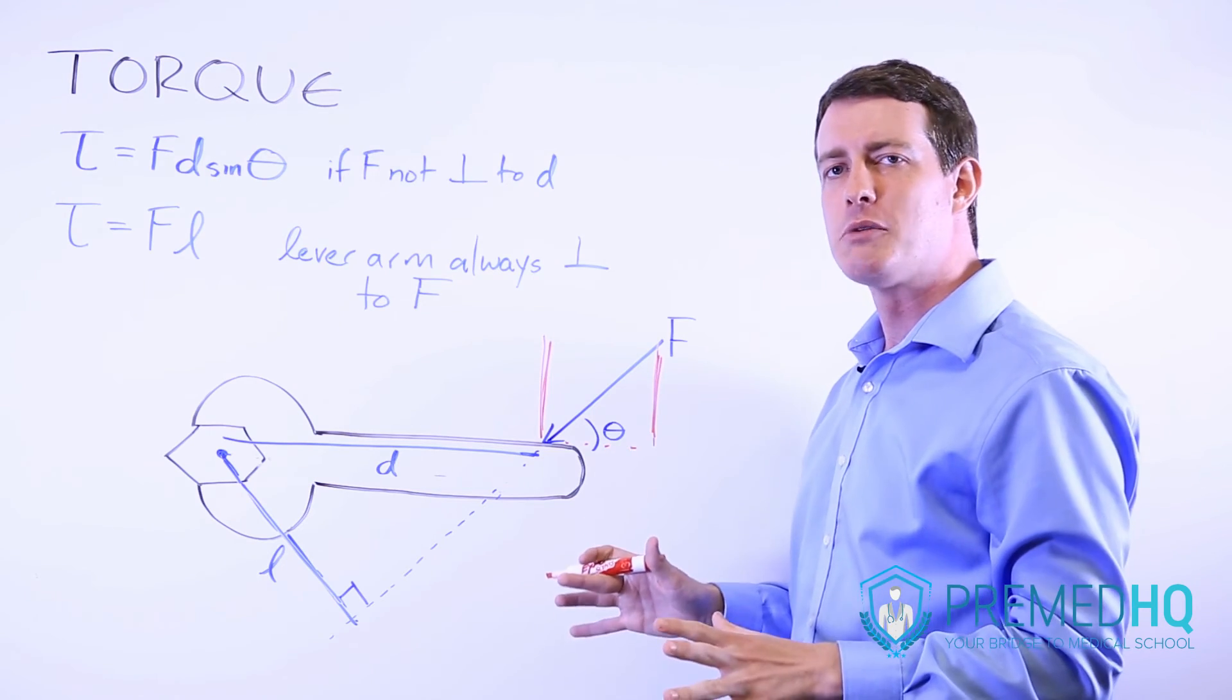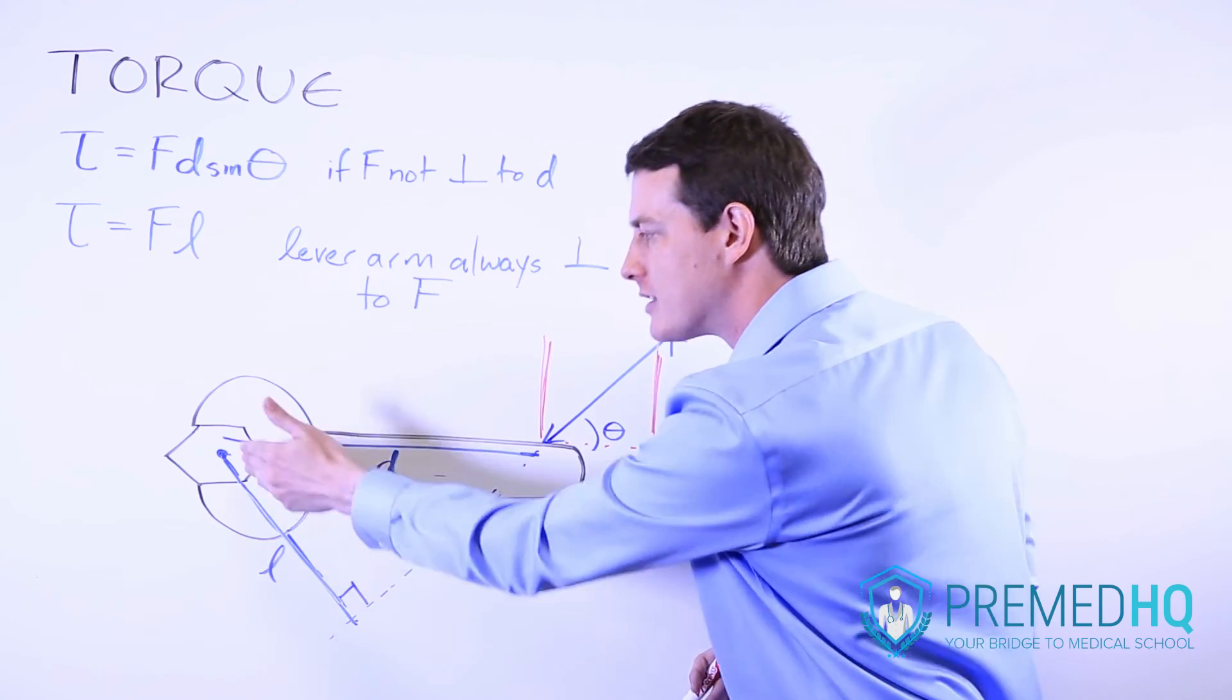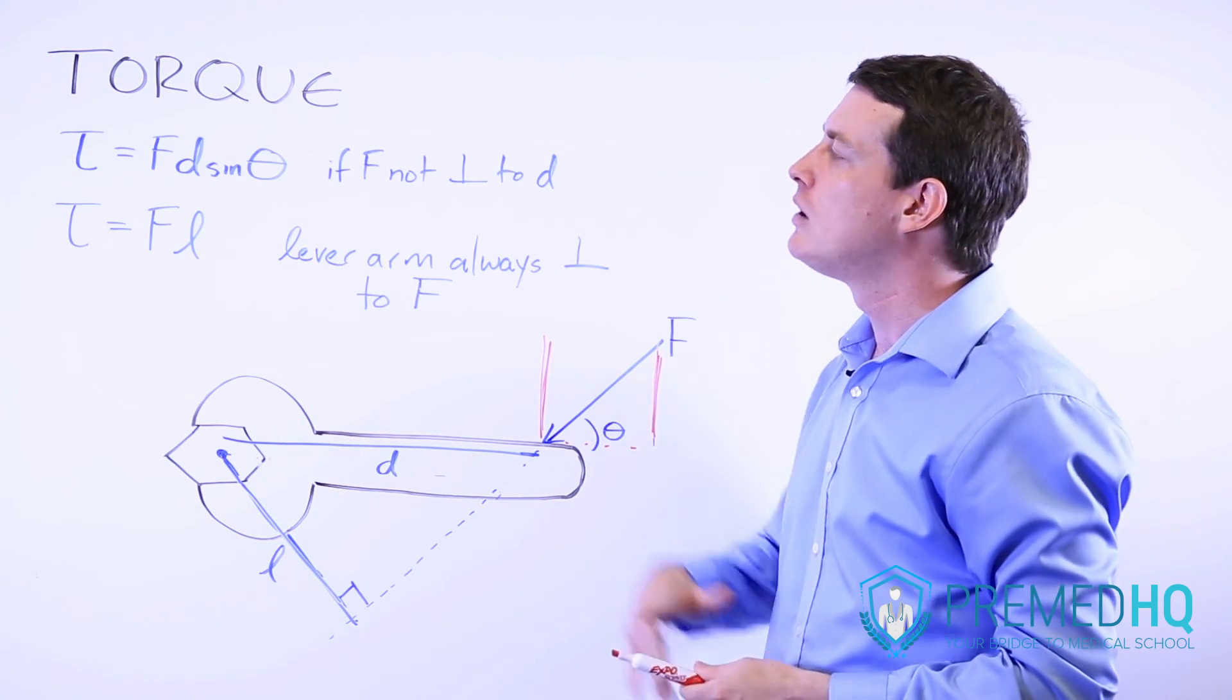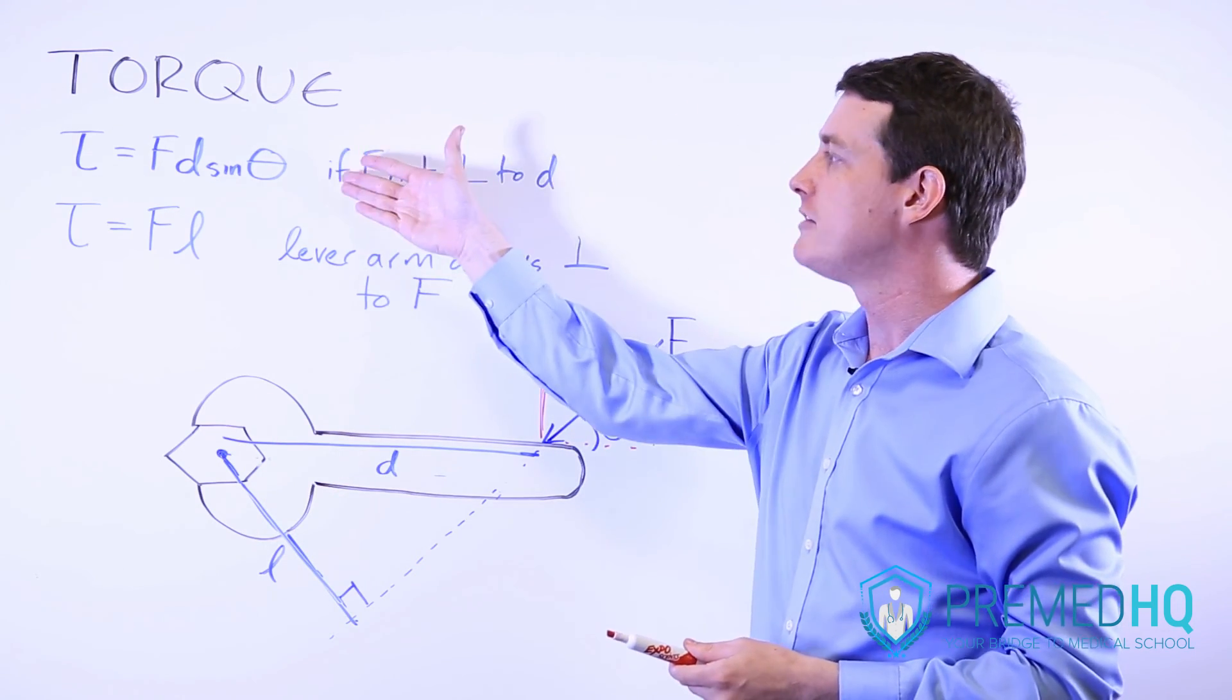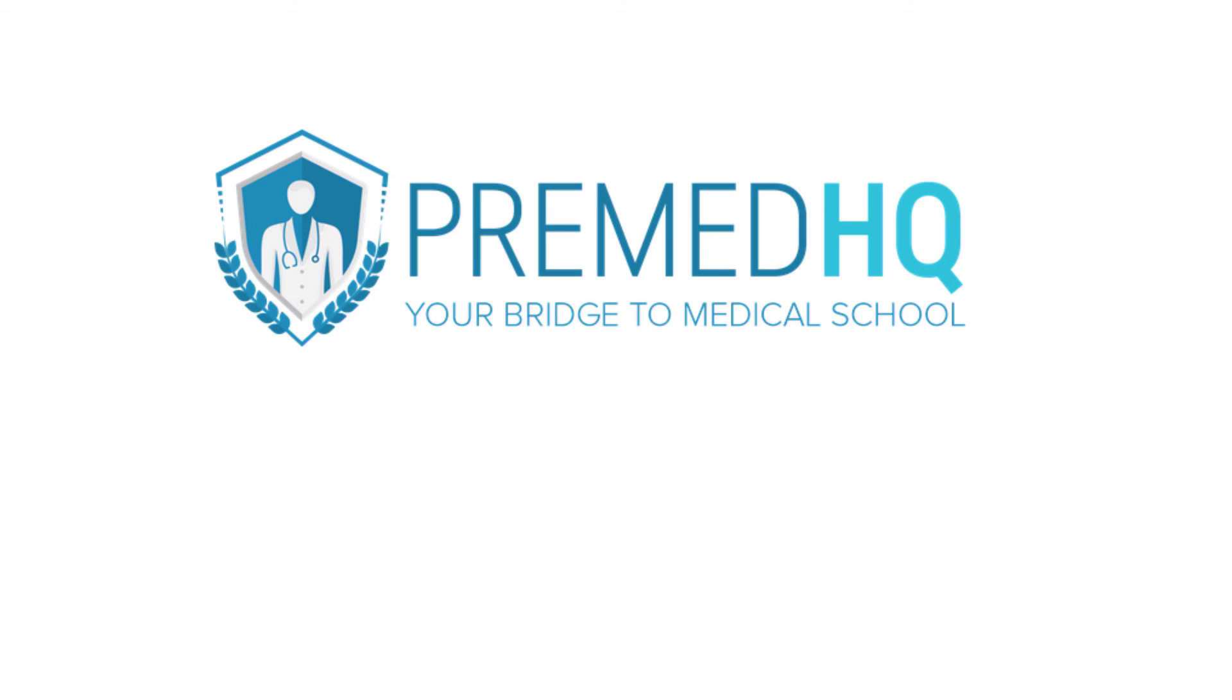So whenever you're dealing with torque, try to get those right angles, whether it's through trigonometry or through continuing this vector, and then you'll be good to go with these two formulas: torque equals Fd sin θ or torque equals force times lever arm. Hope you enjoyed this video. Thank you.